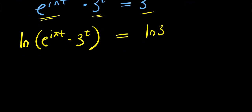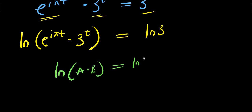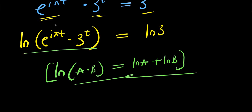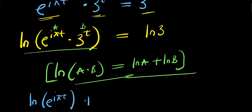Now let's consider this property: if you have the natural log of a times b, this equals the natural log of a plus the natural log of b. We apply this property right here, where this is our a and this is our b. So what we get will be the natural log of e to the power of i times pi times t, plus the natural log of three to the power of t, equals the natural log of three.